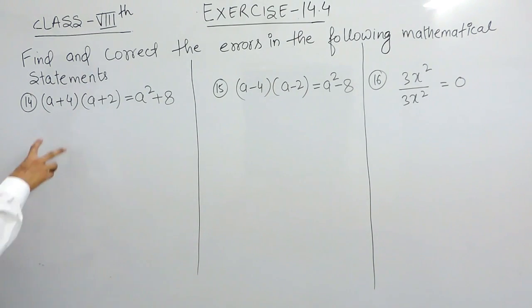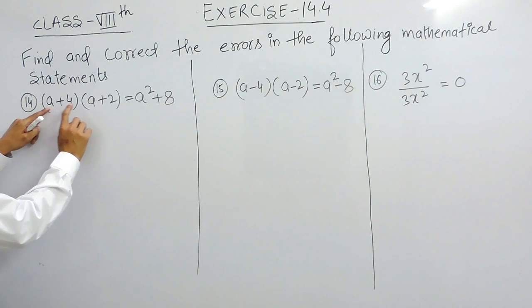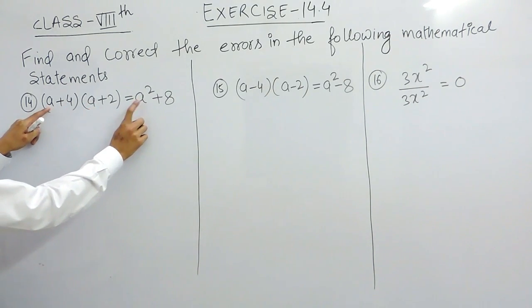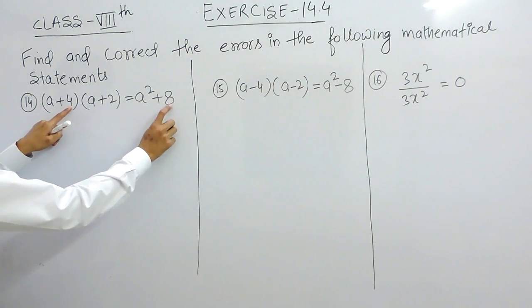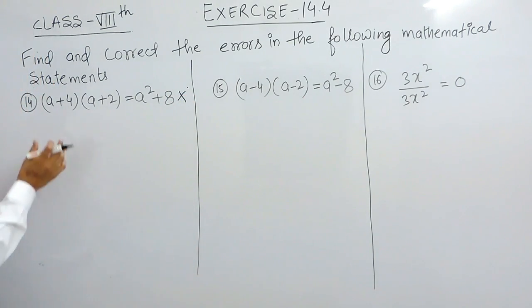Now you have to multiply this with this, and in this the answer is given as this. What he has done is he has multiplied a by a which is a square, and 4 by 2 which is 8. So this is the wrong method to do so. Here it is two terms and here also it is two terms. And to multiply it, you have to multiply each term with both the terms in another bracket.